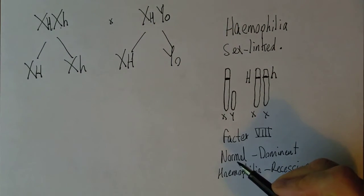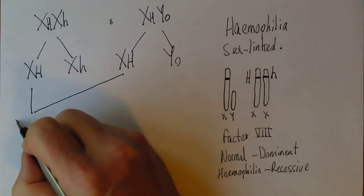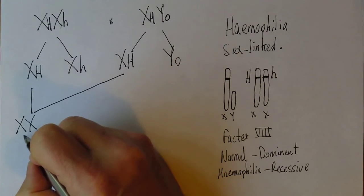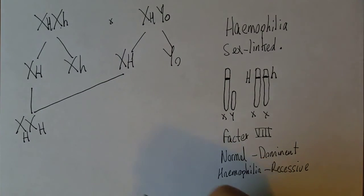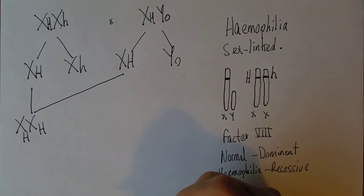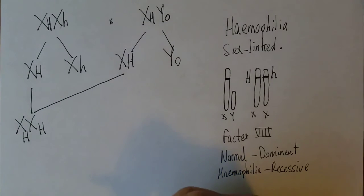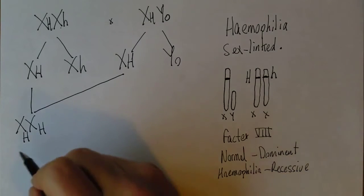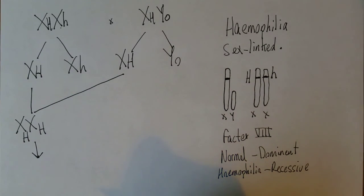We produce gametes and look at the range of possible combinations. One possibility gives us a girl with two big H's — genotypically homozygous, phenotypically normal, because she has two copies of the normal dominant gene. The added advantage is she cannot pass haemophilia on to the next generation because she doesn't carry the abnormal gene.